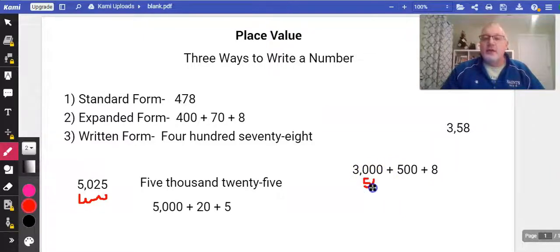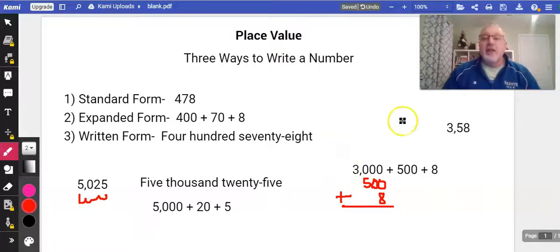So I would have the kids come over and say, oh, I'm going to put the 500 underneath, right, zero and a zero, and then I put the 8 here. So if you have the standard or the expanded form given to you, just go add them up. Just stack them up.